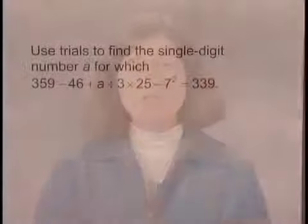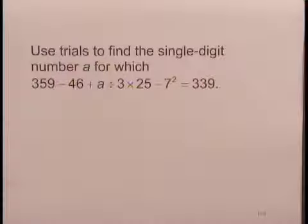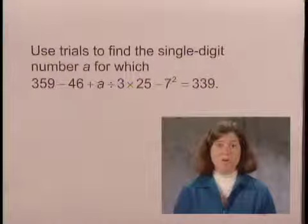For this question, we're asked to use trials to find the single-digit number A for which 359 minus 46 plus A divided by 3 times 25 minus 7 to the second power equals 339.